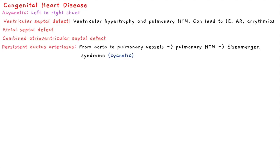Just as you can have a hole in the ventricle, you can also have a hole in the atrium — this is an atrial septal defect. There can also be a combination of both, known as a combined atrial ventricular septal defect.